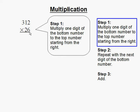And that means we take the first digit of the bottom number starting from the right and we multiply that with the top number. 6 times 2 is 12 and you carry the 1 over. 6 times 1 is 6 plus 1 is 7. 6 times 3 is 18.